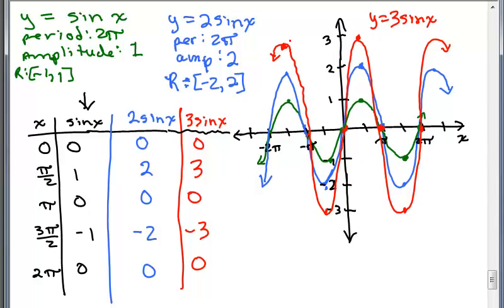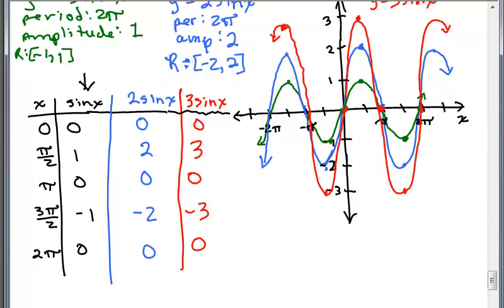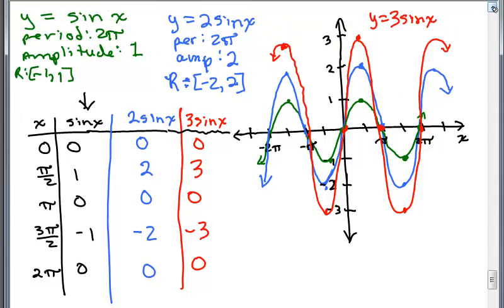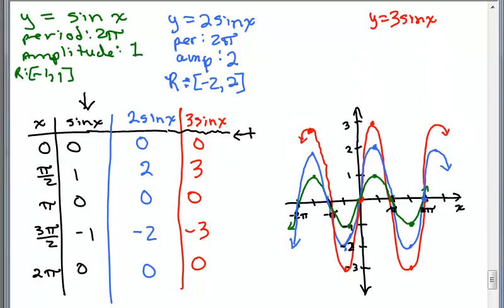So we have y equals 3 sine of x. The period is the same. So for y equals 3 sine x, the period keeps on coming down. I'm going to move this graph down just a little bit. All right, so what would the period be now? The period of this is still 2 pi, right? There's one full cycle between 0 and 2 pi.